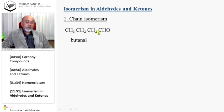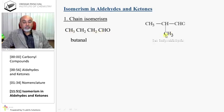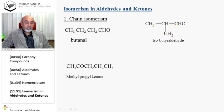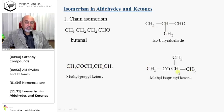Now, isomerism in aldehydes and ketones — chain isomerism. Here the number of carbons in chains are different. Like butanal — its chain isomer is 2-methylpropanal, or isobutyraldehyde. Methylpropylketone, or pentane-2-one.